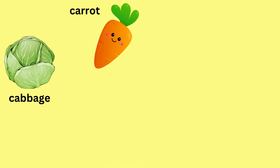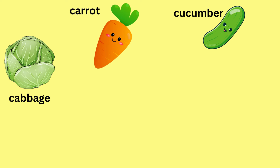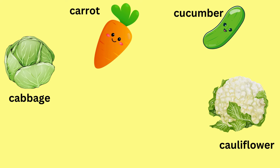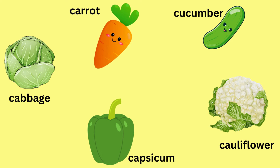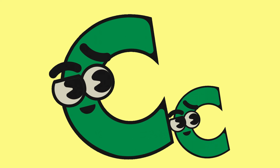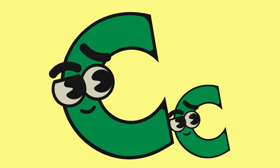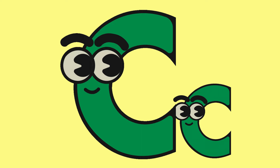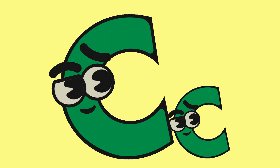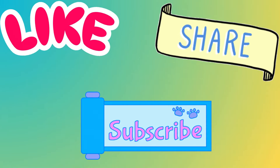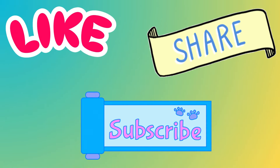Do you know there are so many vegetables that start with the 'k' sound? Cabbage, carrot, cucumber, cauliflower, capsicum! Wow, we've learned so many words that begin with the sound. My little ones, I hope you had lots of fun helping letter C find all his C-friends. Bye!